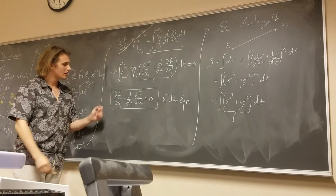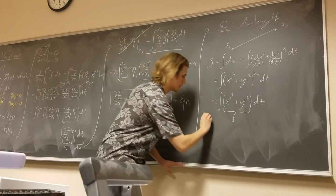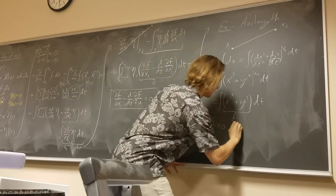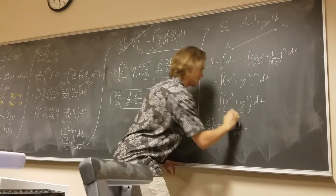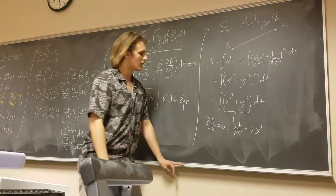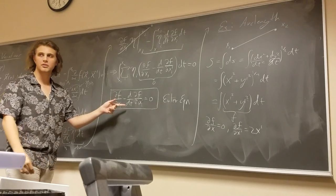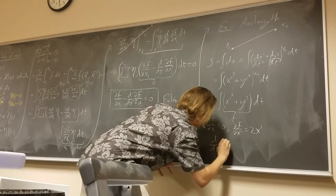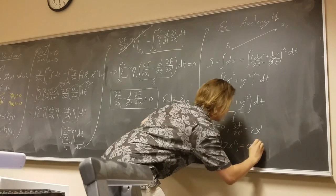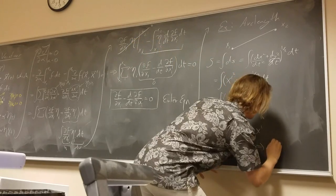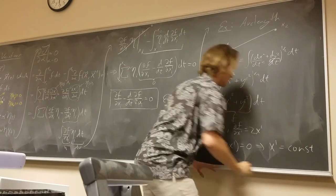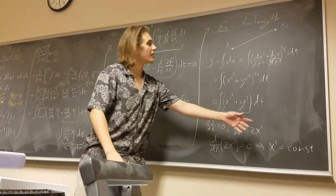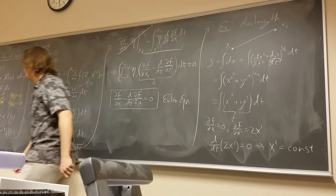We're now going to return to the arc length problem. The derivative of f with respect to x — well, it doesn't have an x in it, so it's zero. The derivative of f with respect to x' is just 2x'. So we have 0 minus d/dt of 2x' equals 0, which means d/dt(2x') = 0, so x' must be constant. And similarly y'. This implies that the path is indeed linear. That's how we do that.